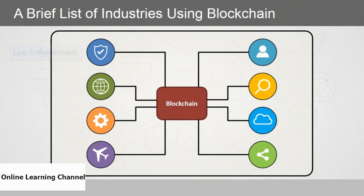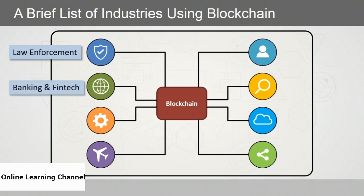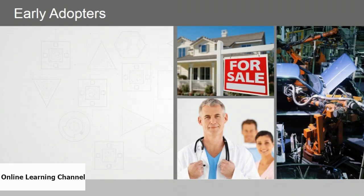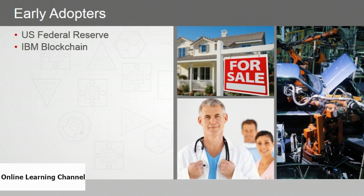Industries affected by blockchain include law enforcement, banking, insurance and financial companies, the marketing world, transportation and logistics, human resources, the Internet of Things, the cloud, and the real estate industry. Early adopters include the U.S. Federal Reserve, IBM with its IBM blockchain, Visa, and stock markets including NASDAQ and ASX, the Australian Securities Exchange.